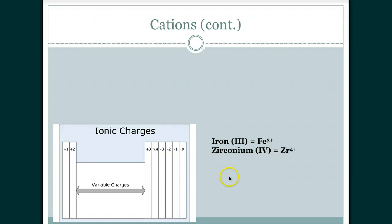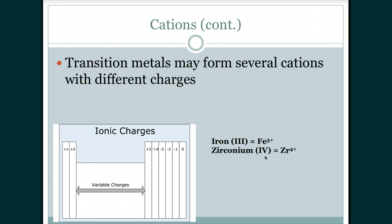There is a whole group of elements called transition metals which have variable charges. For example, iron (ferrum) can be Fe³⁺ or Fe⁴⁺, so it's very important to indicate which ion we're talking about when naming compounds. If iron has a charge of +3, we call it iron(III). Zirconium with a charge of +4 is indicated in parentheses using Roman numerals.